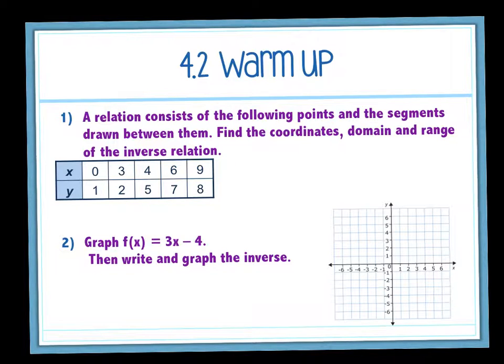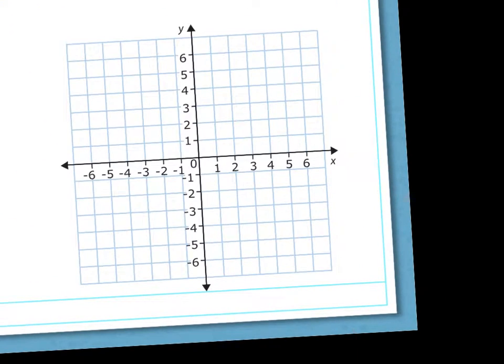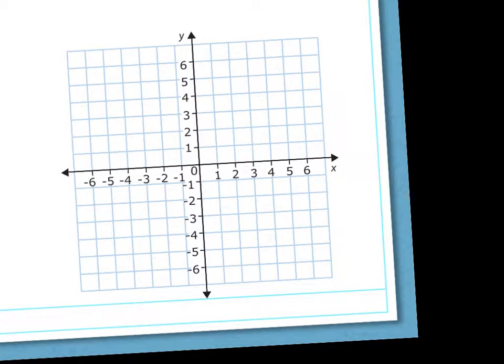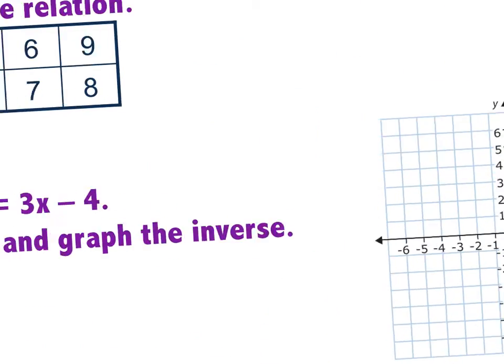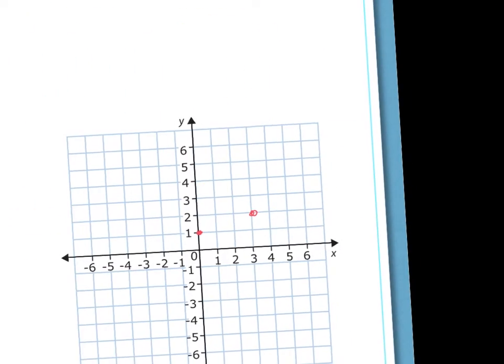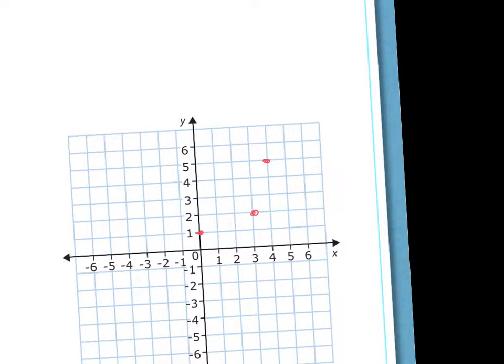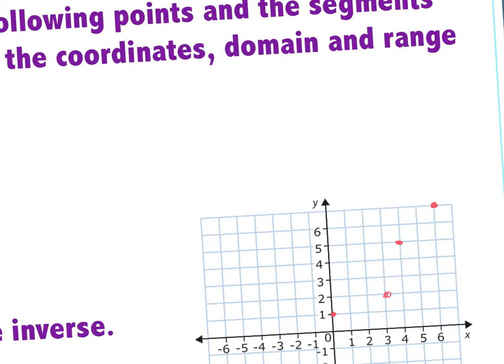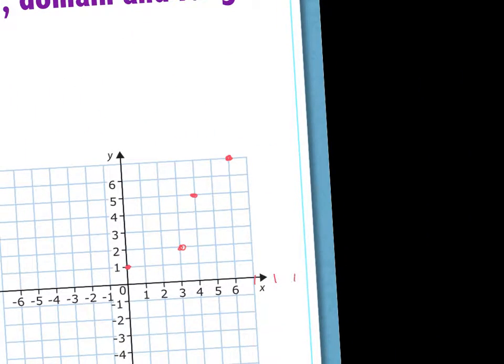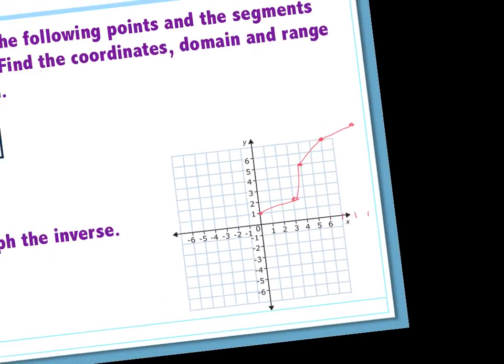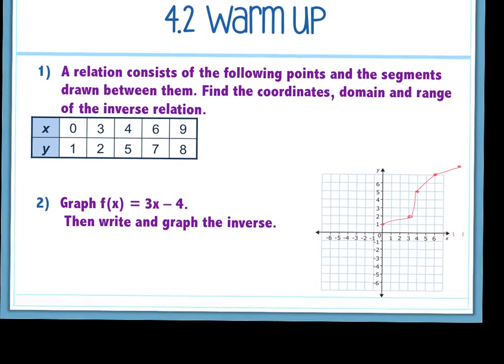So the original points would have been 0-1, 3-2, 4-5, 6-7, and 9-8. So 7-8-9-8. So the original function should have looked like that. And then how do I find the inverse points? Just switch the x and the y.